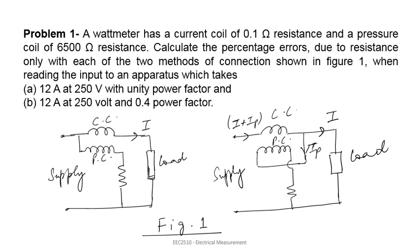Dear students, welcome to the next lecture of electrical measurement. We were discussing different types of instruments in the last lecture — moving coil, moving iron, dynamometer type, thermal type, and electrostatic type. In this class, we will look at some numerical problems related to the dynamometer type wattmeter.